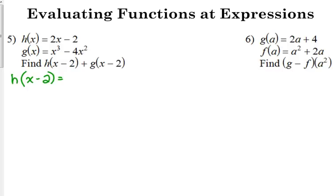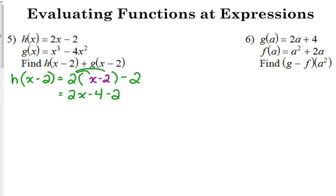Here's what I think helps to do that. When you're plugging an expression in, when you write down your h function, where you see x, just put a blank set of parentheses. So that's my h of x function right there, but I just left the x out, and in its place I'm going to put x minus 2. Then I'm going to simplify. Distribute the 2: 2x minus 4. I've got a minus 2 there on the end. Combine my terms: 2x minus 6. That is h of x minus 2.